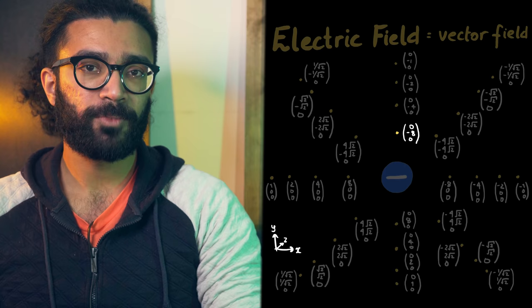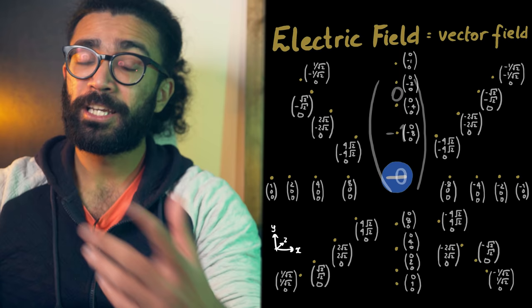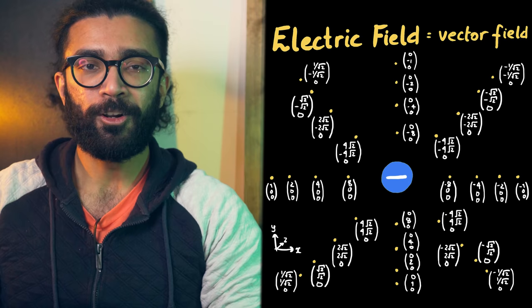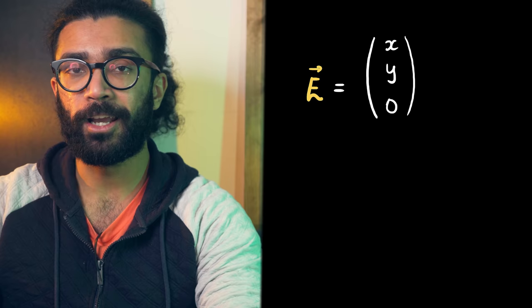So, for example, at this point, the vector is big and has these x, y, and z components, whereas at this point, the x, y, and z components are smaller, because the electric field vector overall is smaller as well. Now, here's the thing. In many cases, we can represent the entire electric field with one simple vector that helps us calculate the vector field at every point, rather than having to write out the vector at every point in space. For example, we might have an electric field that looks like this: x, y, 0.